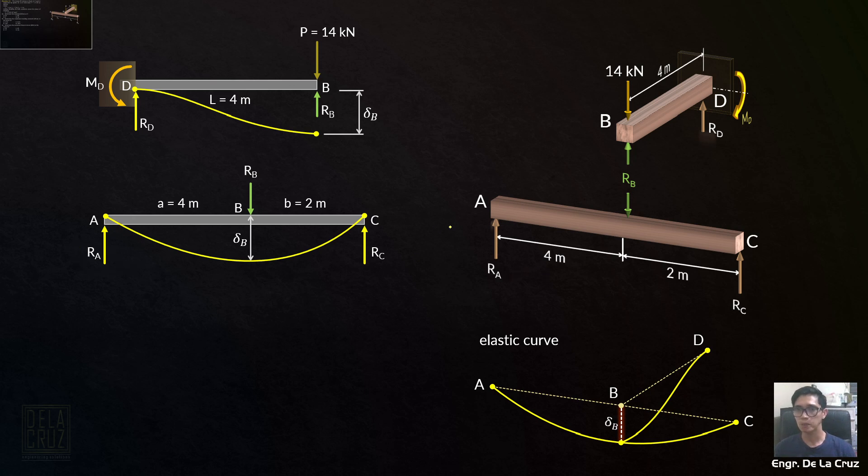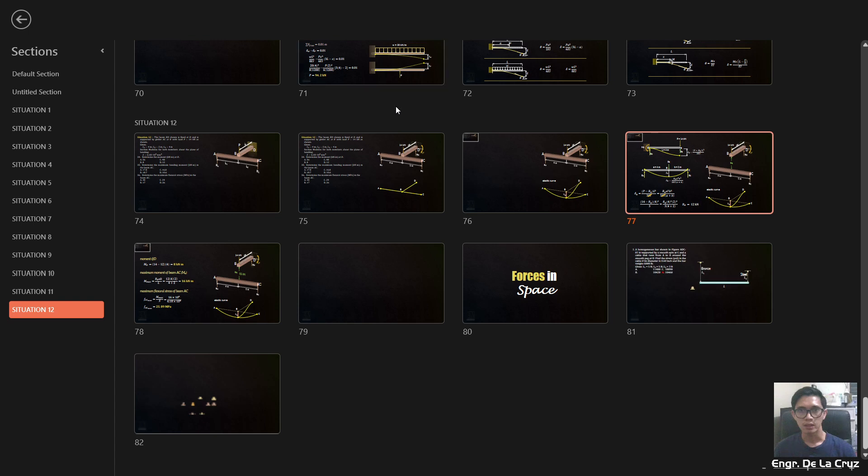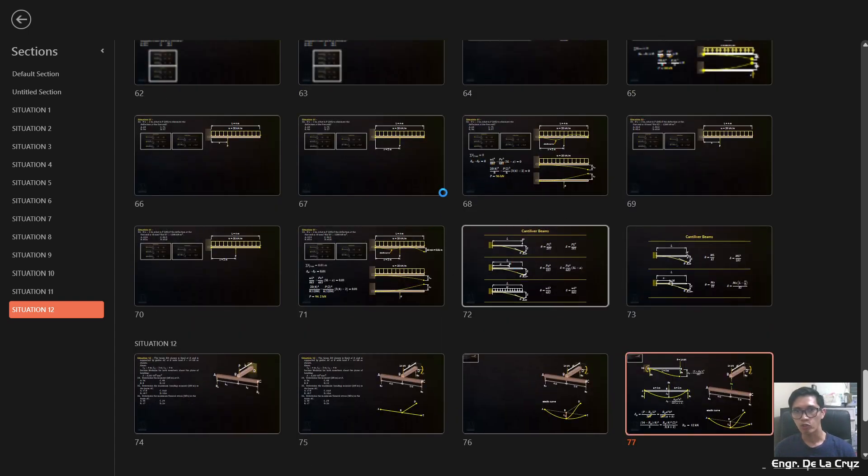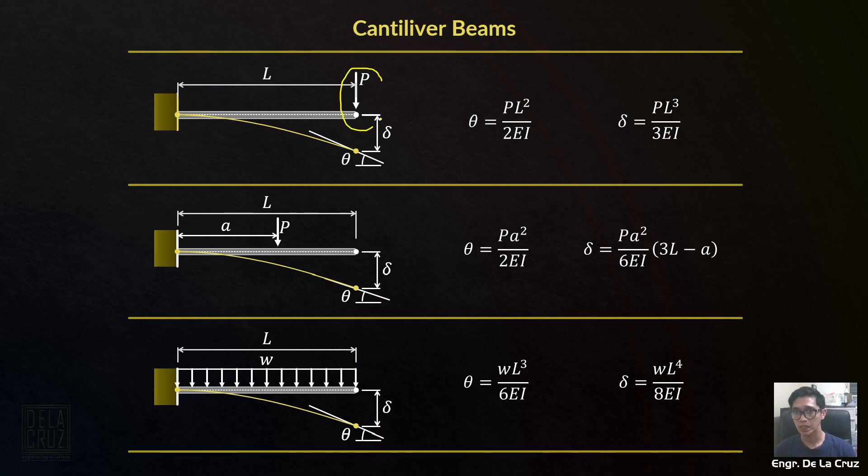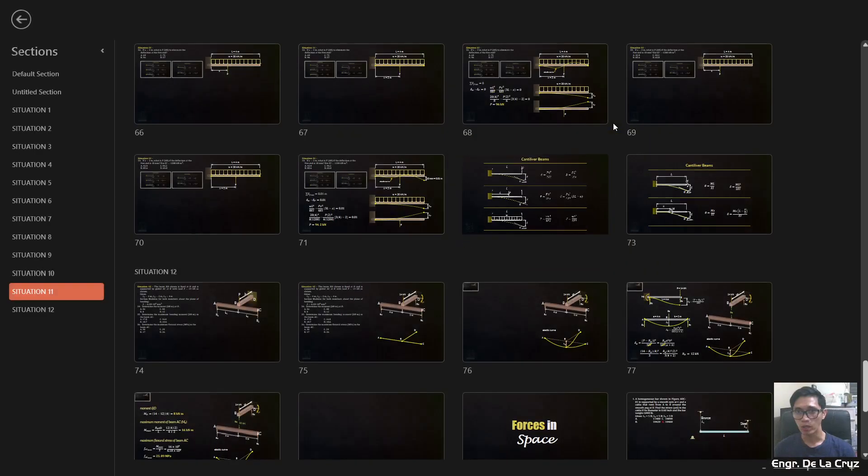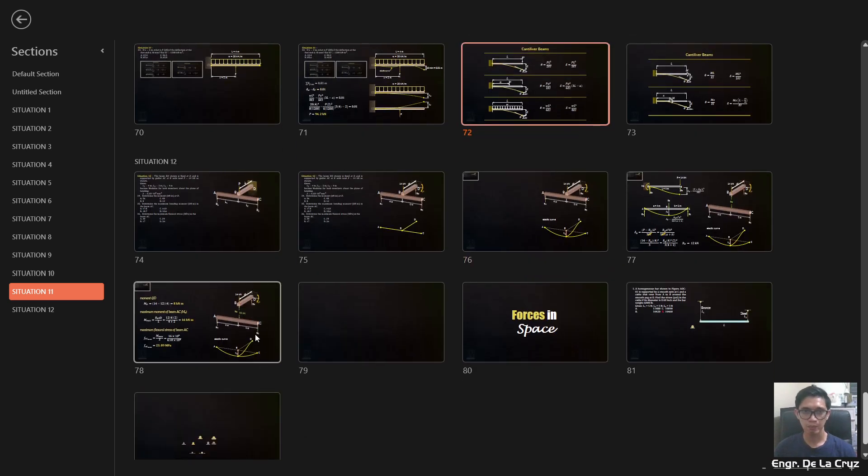Let's call it A, the 4 meters, B, the 2 meters. Then the Rb will be passed here. It will be passed downward. Still, the delta B here is equal to the delta B of the cantilever beam. By the way, if you remember situation 11, the formulas were given. The formula for the deflection of the free end with concentrated load is P L cubed over 3 EI. We may use that one so we don't have to derive it.